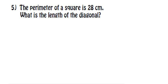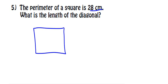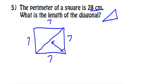The last one tells us the perimeter of a square is 28 centimeters and wants the length of the diagonal. If the perimeter is 28, dividing by 4 gives side lengths of 7. A square with a diagonal creates a 45-45-90 because the equal sides mean equal angles. So x = 7, and the diagonal is x√2 = 7√2 centimeters.